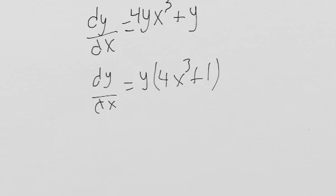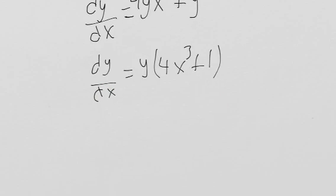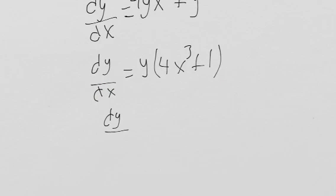So now this is going to allow us to divide our y to this side, and then to multiply our dx to that side. So we get dy over y equals 4x cubed plus 1 dx.